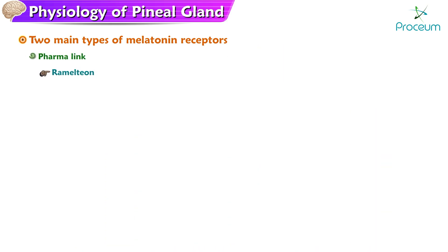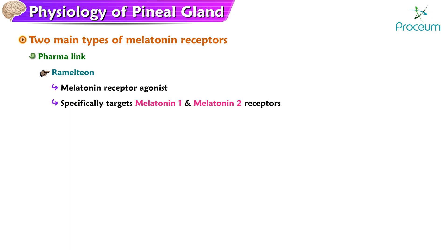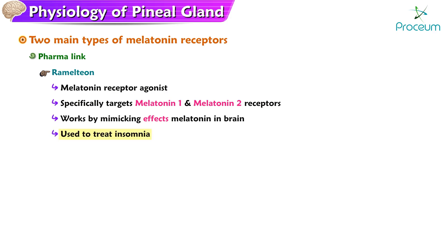Ramelteon is a melatonin receptor agonist, specifically targeting the MT1 and MT2 receptors, and it works by mimicking the effects of the hormone melatonin in the brain. Ramelteon is used to treat insomnia, particularly in individuals who have difficulty falling asleep.